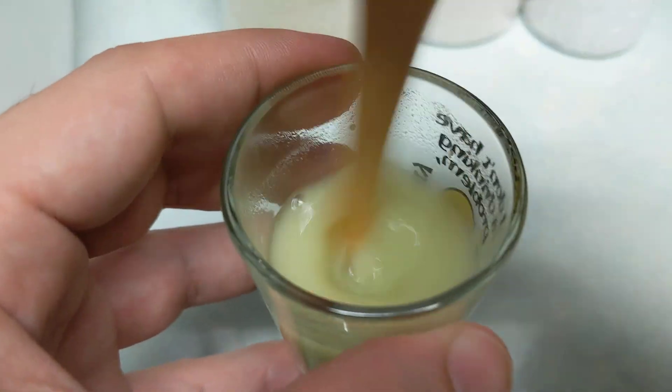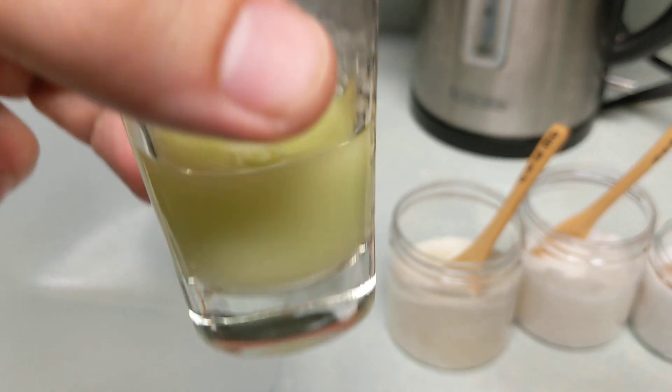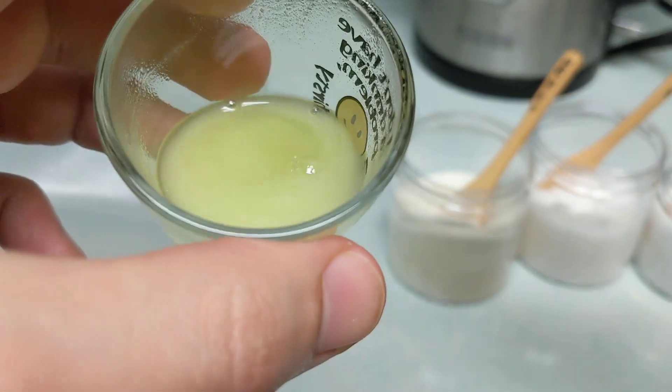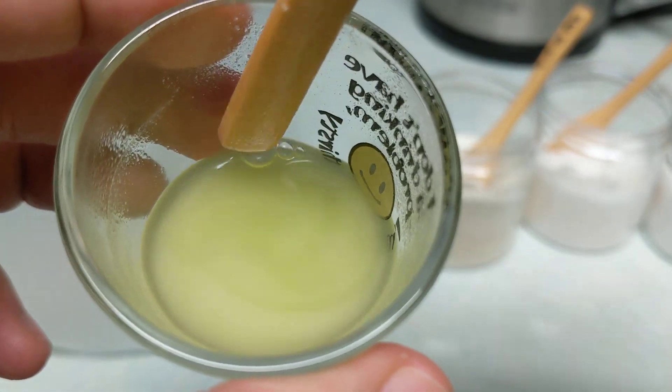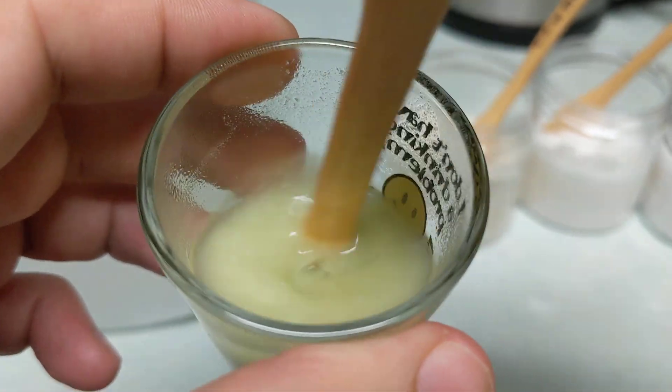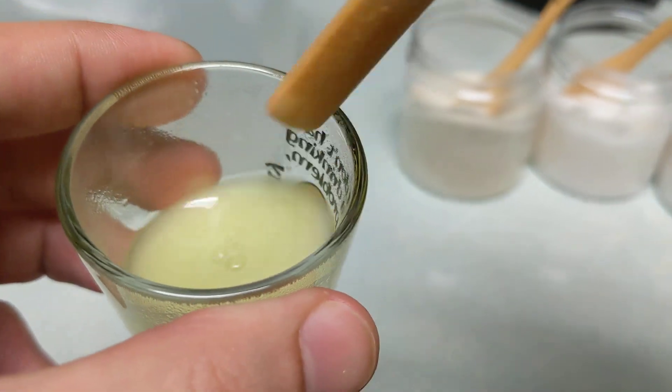So you can see that the color completely changed from what it originally looked like. It's this like pasty, almost pale green color. So that's mixed up and now we're just going to add that to our container.